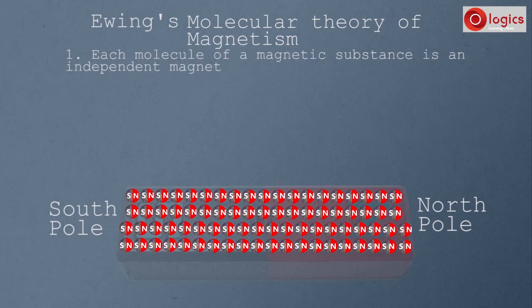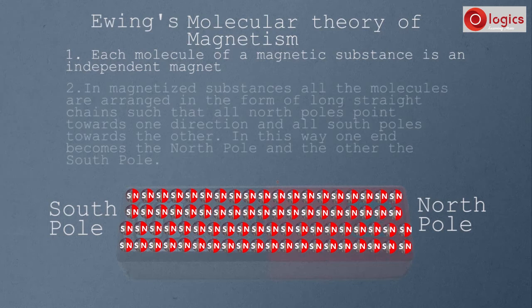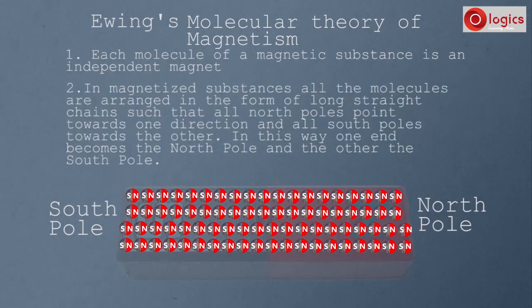The second point of this theory states that in magnetized substances, all the molecules are arranged in the form of long straight chains such that all north poles point towards one direction and all south poles towards the other. In this way, one end becomes the north pole and the other end the south pole.